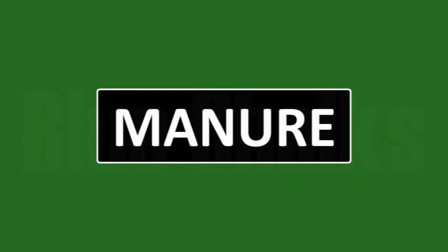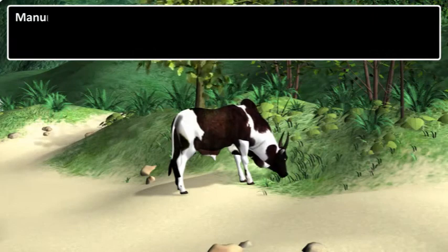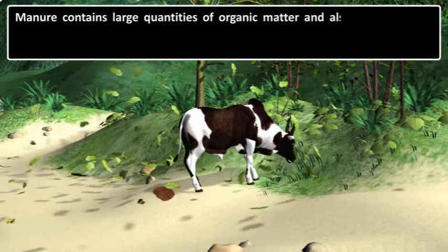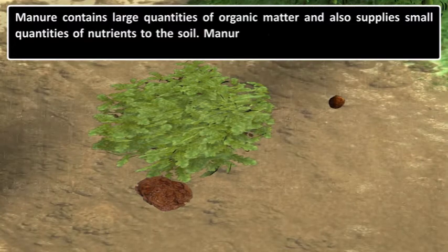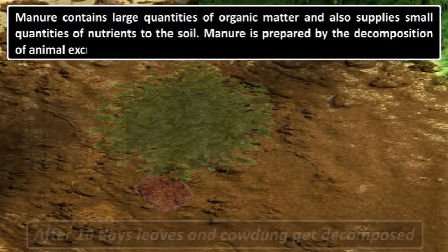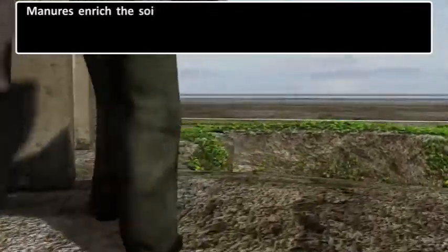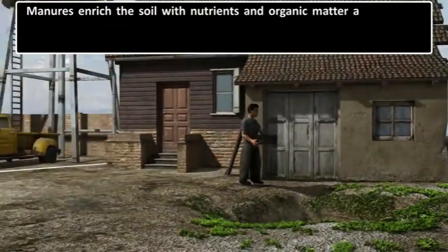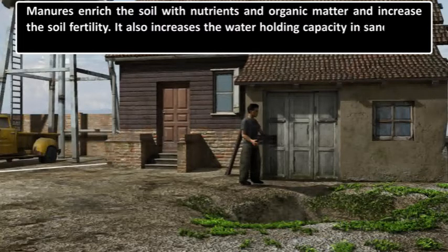Let us see what are manures and fertilizers. Manure contains large quantities of organic matter and also supplies small quantities of nutrients to the soil. Manure is prepared by the decomposition of animal excreta and plant waste. Manures enrich the soil with nutrients and organic matter and increase the soil fertility. It also increases the water holding capacity in sandy soil and prevents waterlogging in clay soil.